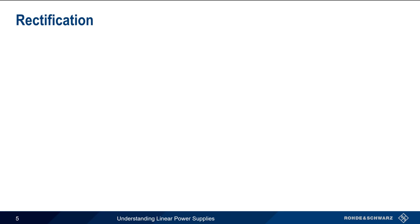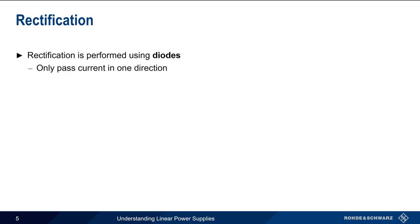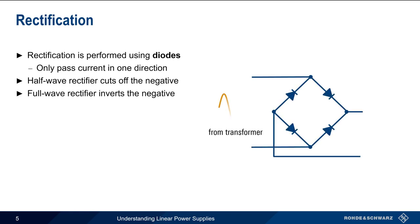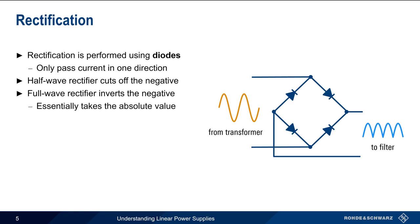This step-down voltage is still AC, so the next step is rectifying this waveform using diodes, which are components that only pass current in one direction. A single diode can act as a half-wave rectifier that essentially removes the negative portion of a waveform. But linear power supplies normally use a full-wave rectifier that inverts the negative portion of the waveform, and thus effectively produces its absolute value.